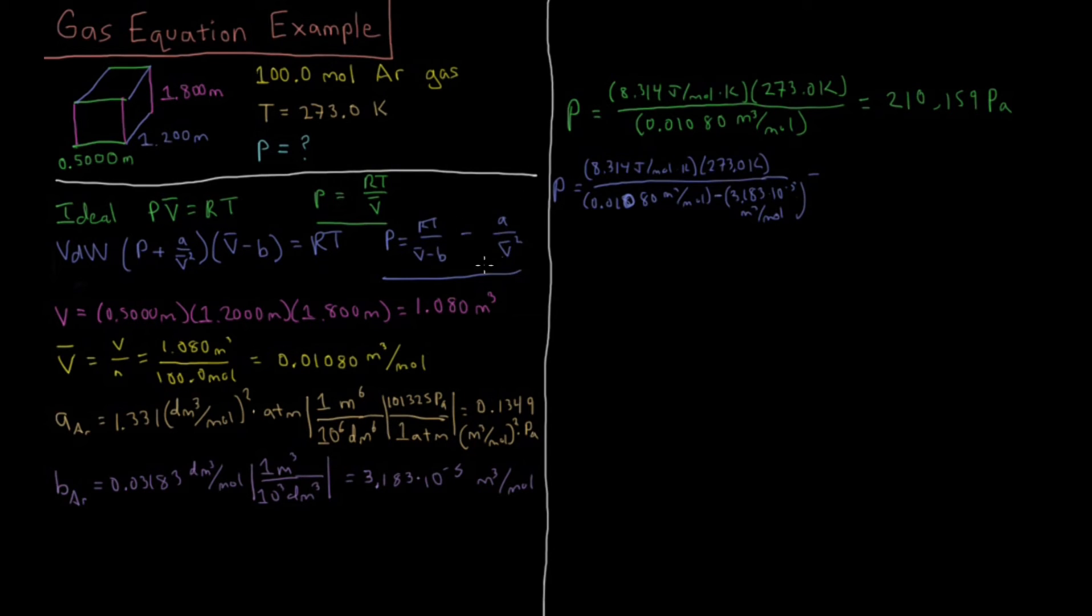From that we subtract the second term, A over V̄ squared. For A, we have 0.1349 meters cubed per mole squared Pascals over molar volume squared, 0.01080 meters cubed per mole, and that whole term gets squared. That gives us a final pressure for the Van der Waals equation of state of 210,607 Pascals.